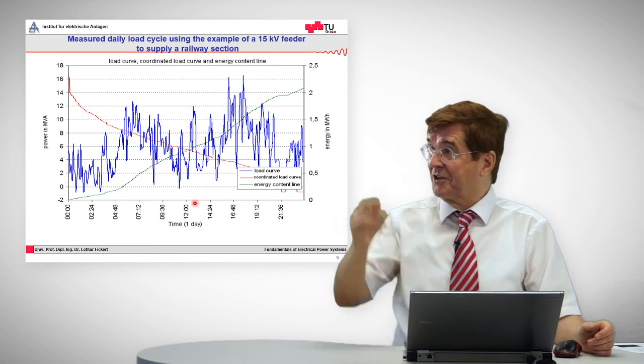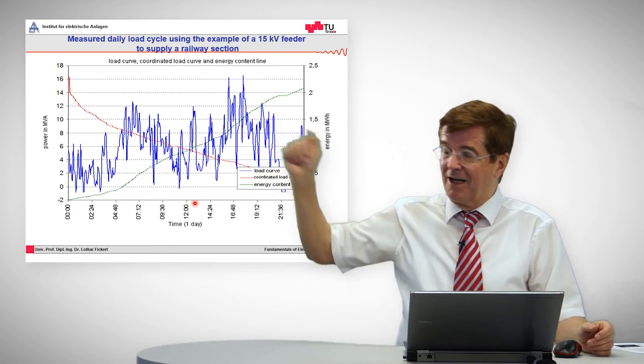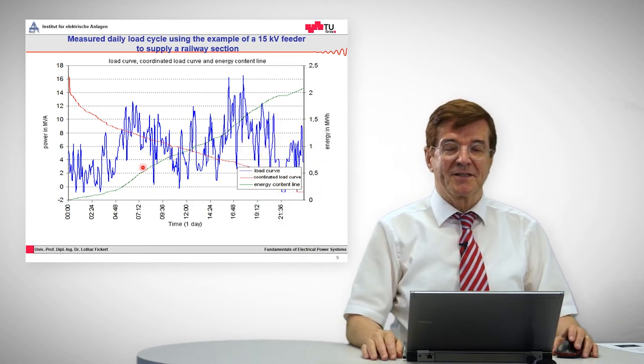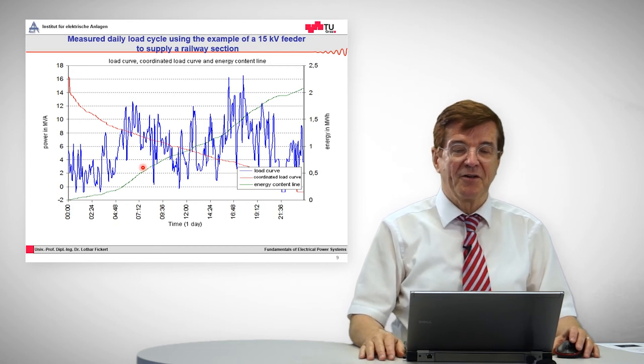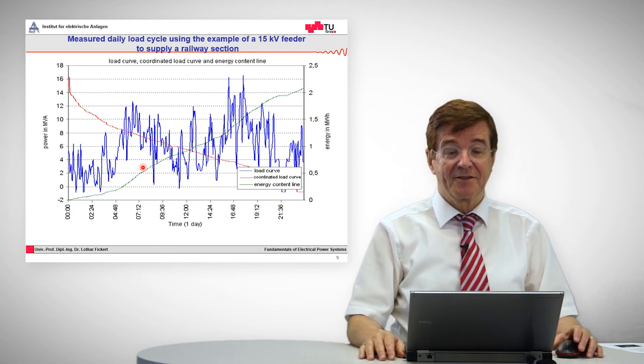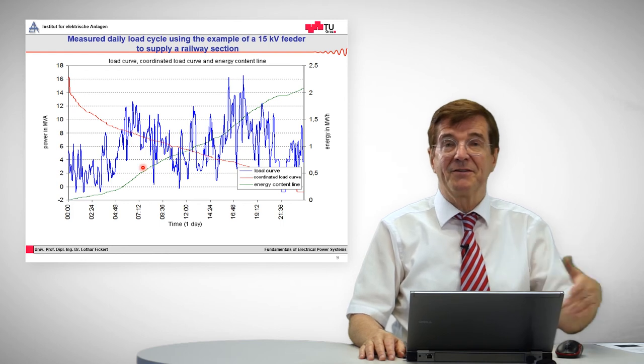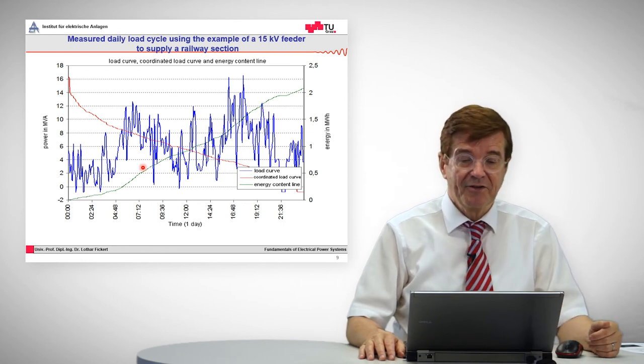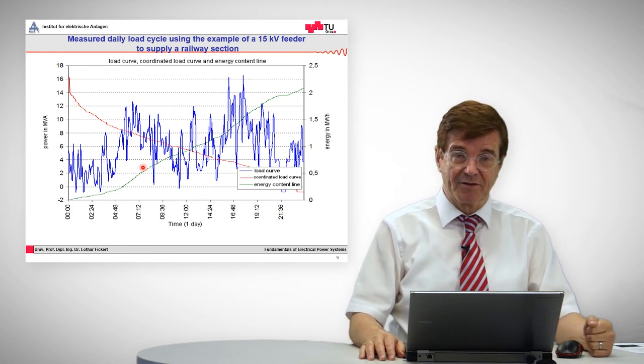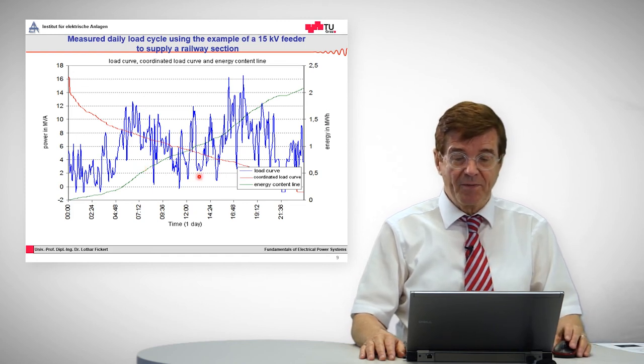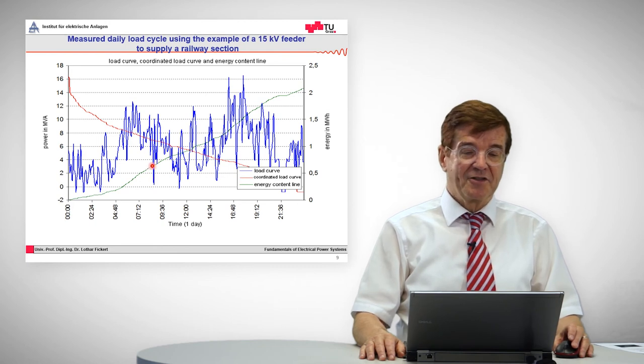This very rough picture, which goes up and down, up and down, is the power consumption of a feeder of a railway station. So the trains, whenever the trains start, then you have a lot of electricity and power consumption. And when the trains stop, maybe you have something like back feed of energy.